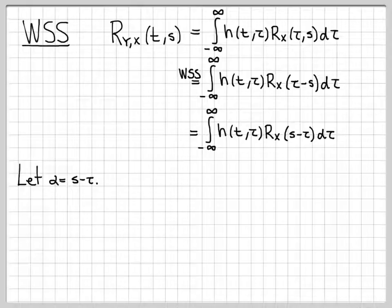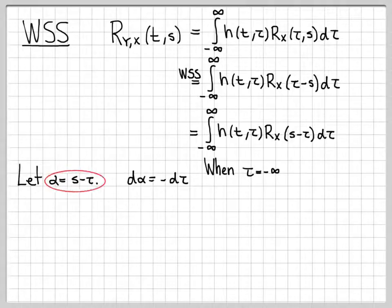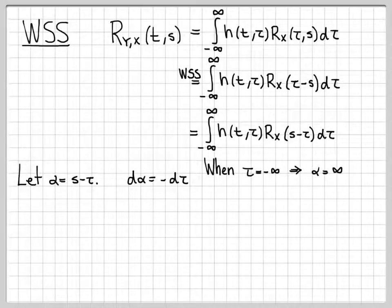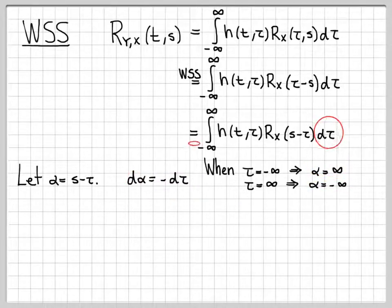Now we're going to do a change of variable to simplify this. I'm going to replace s minus tau with the variable alpha. So if alpha is s minus tau, that means the derivative of alpha with respect to tau is negative d tau. Also, when tau is negative infinity, alpha becomes s minus negative infinity, which is infinity. And similarly, when tau is positive infinity, alpha would be negative infinity. So these pieces of information tell us what to replace the limits and variables with.